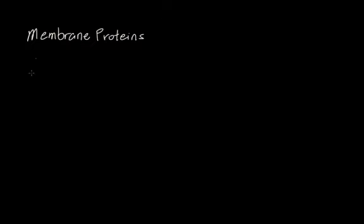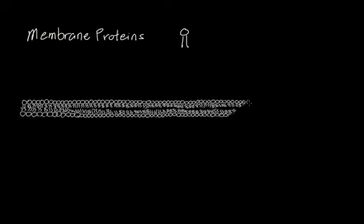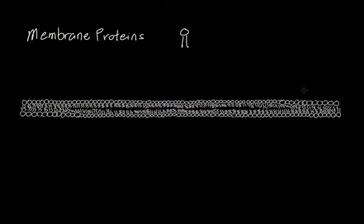Just to remind us what a cell membrane actually is: a cell membrane is made up of little things called phospholipids. They come together and form what we call a lipid bilayer. Over here, I've pre-drawn a lipid bilayer. It's made up of a lot of these small phospholipids, forming our bilayer — you can see that there are two layers of these phospholipids.